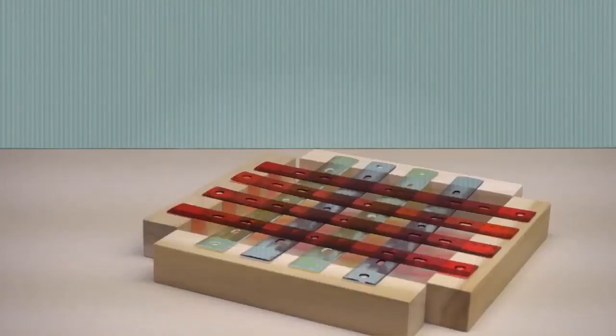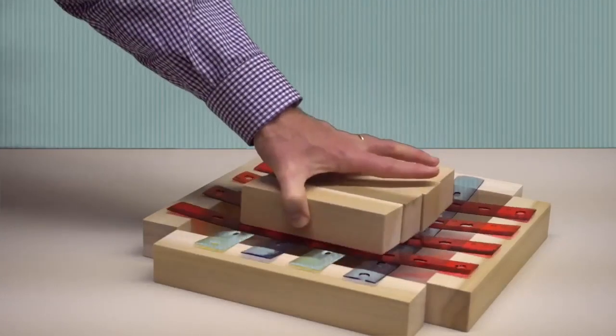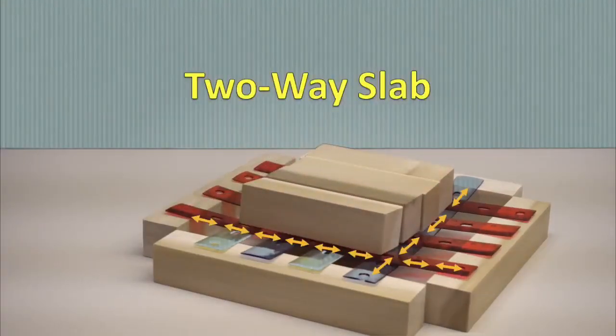If the supports cause the plate to curve in both directions, we have a two-way slab. Carrying of the load is then shared by stresses in the two directions, and deflection is reduced.